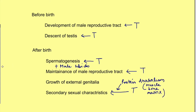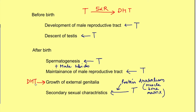Now, dihydrotestosterone. DHT is formed in the cytoplasm where the 5-alpha reductase enzyme acts on testosterone to produce dihydrotestosterone. DHT is responsible for the development and enlargement of external genitals — that is, the penis and scrotum — and also for the development of the prostate gland.